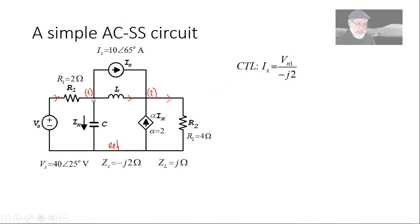CTL1, the controlled current Ix, is just V1 divided by the impedance of the capacitor, negative J2.